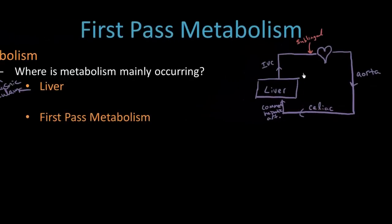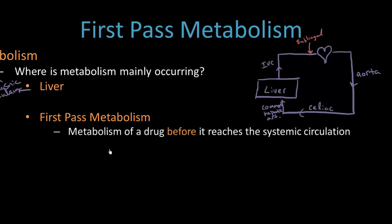So I've somewhat alluded to this, but what is first-pass metabolism? It is the metabolism of a drug before it reaches the systemic circulation. So how could this occur? Well, like I was saying, the liver has two blood supplies. Two blood supplies.